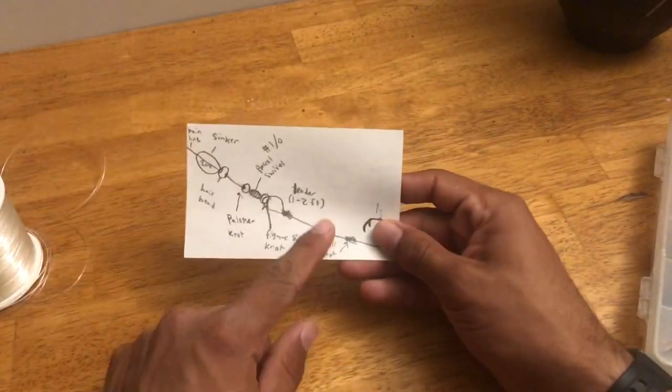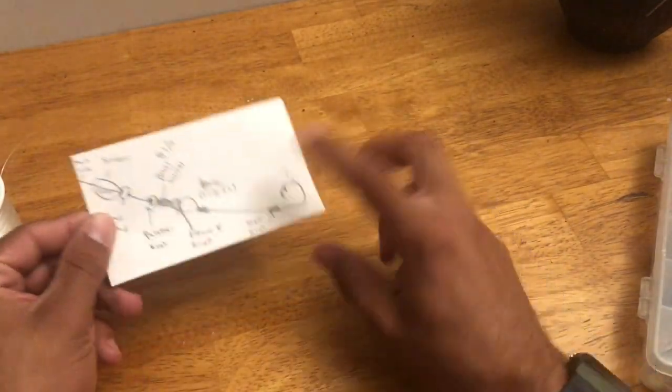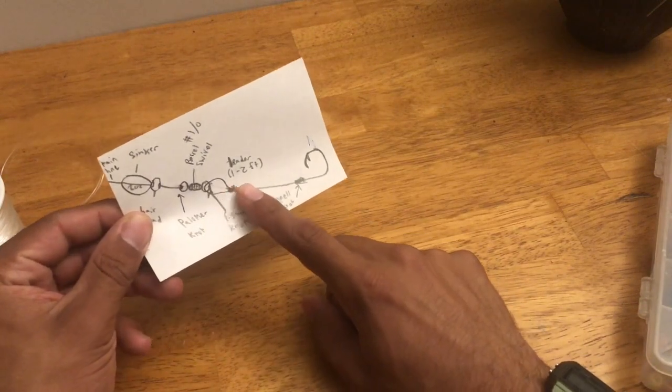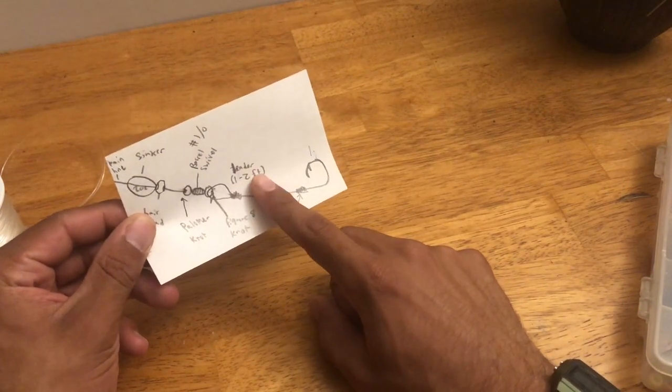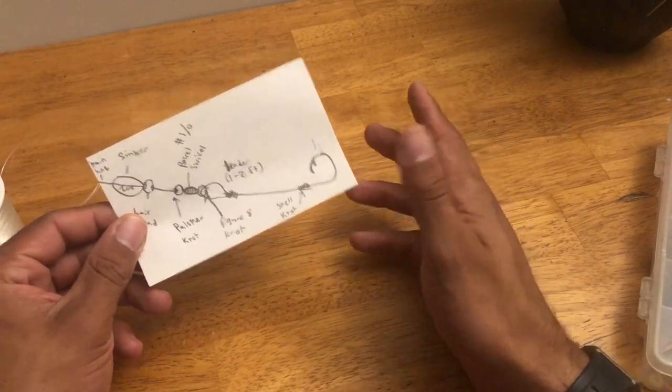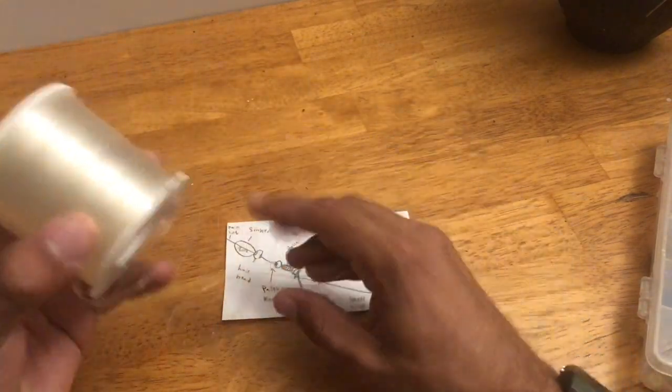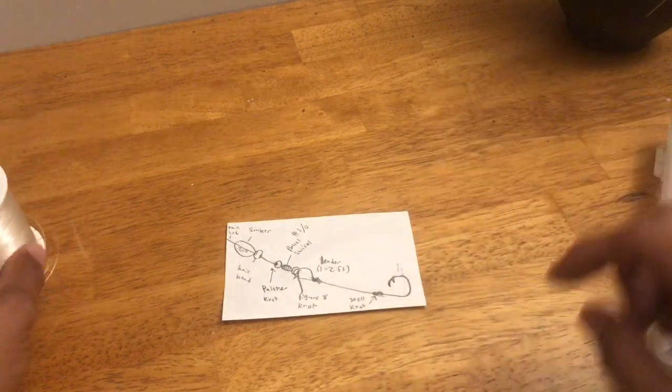So ideally for a leader, I know I made it kind of short, but it's not to scale. I like to have between 15, 18 inches and maybe two feet, two and a half feet, depending on what you're doing. And if you're going to add the bobber knot, if you want it to flow up or down in the water column.